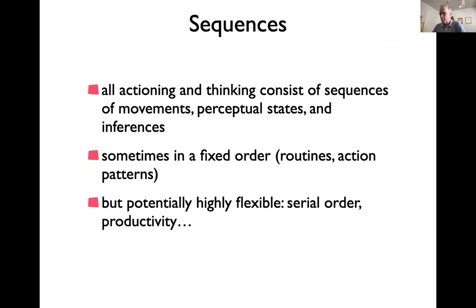Sometimes these sequences are in a fixed order. This would be the case for a lot of low-level motor behaviors that are very automatic. When you reach and grasp, you don't have to think about first opening your hand and then closing it. That is very automatic and tightly coupled — the transport and the grasp. Other sequences can become kind of automatic; for instance, when you're driving home, the different steps become highly habitual routine, which frees attention to do other things at the same time.